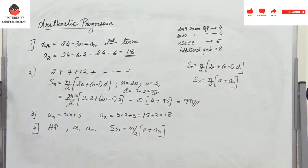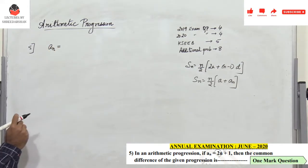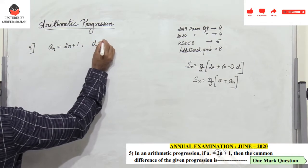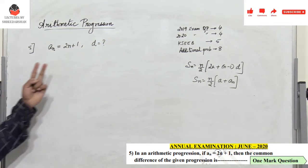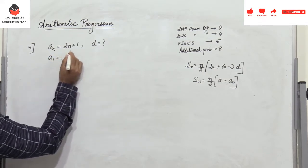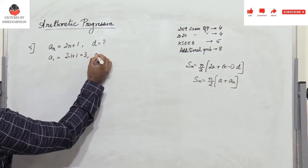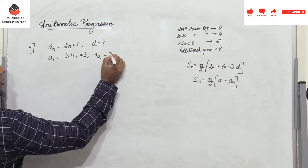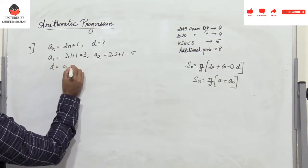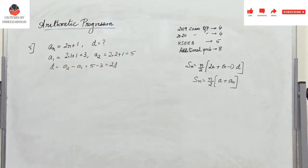Problem 5: if aₙ = 2n + 1, find the common difference. To find d, find two consecutive terms. a₁ = 2(1) + 1 = 3; a₂ = 2(2) + 1 = 5. So d = a₂ - a₁ = 5 - 3 = 2. This is a one-mark problem.